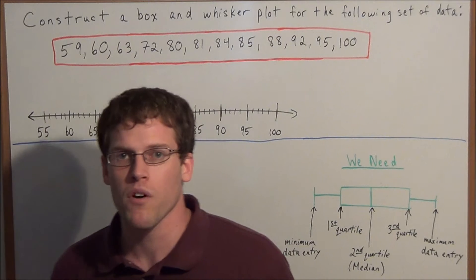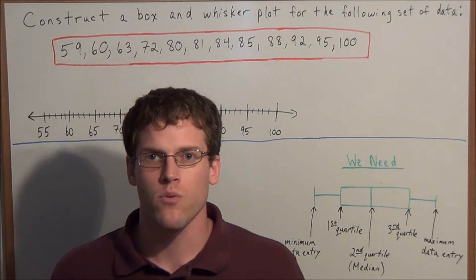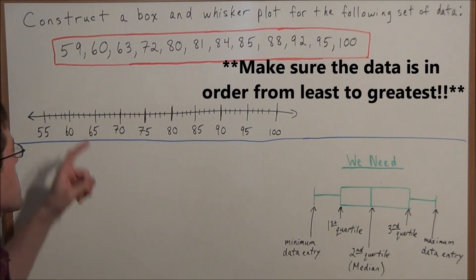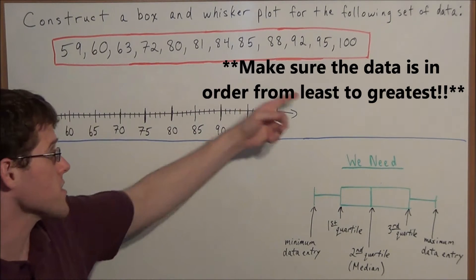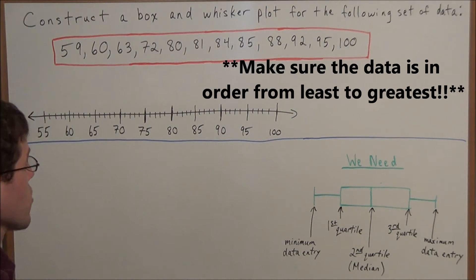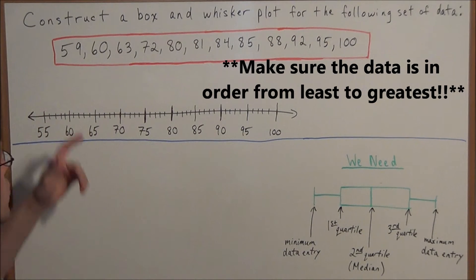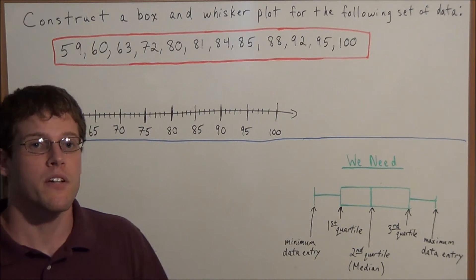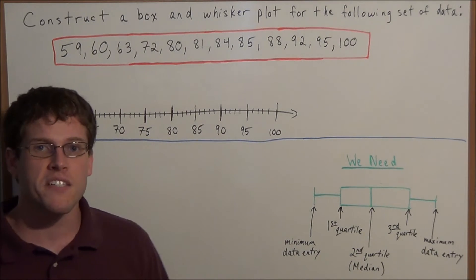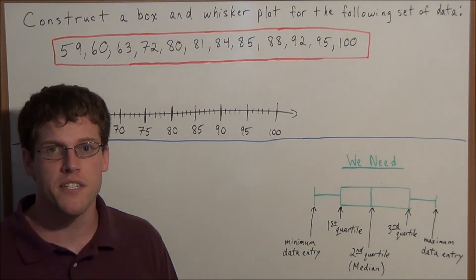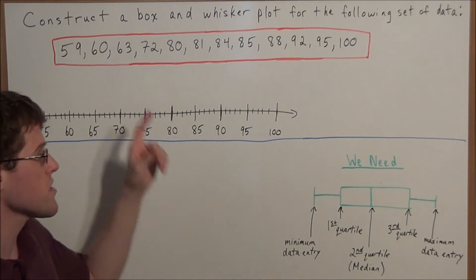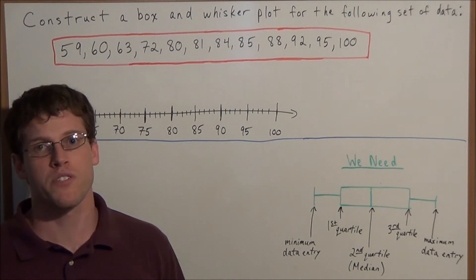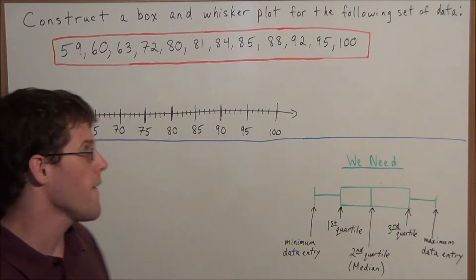Before we begin, one thing we need to be careful with whenever we're doing problems like this is making sure that our data set is in order from least to greatest. I've already organized the numbers in order from least to greatest. The main technique we're going to need to complete this problem is finding the median of a data set — we're going to use that technique three times.